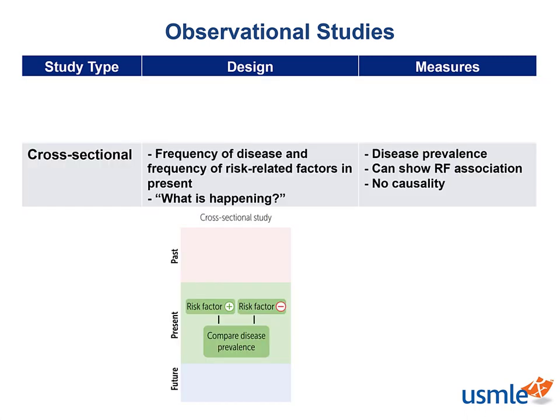A cross-sectional study asks what is happening at this exact point in time, because it takes place in the present. It collects data from a group of people to assess the frequency of disease and the frequency of risk factors at a particular point in time — it is a snapshot study design. It gathers data about exposures and outcomes simultaneously. While it can show risk factor association with disease, it does not establish causality.